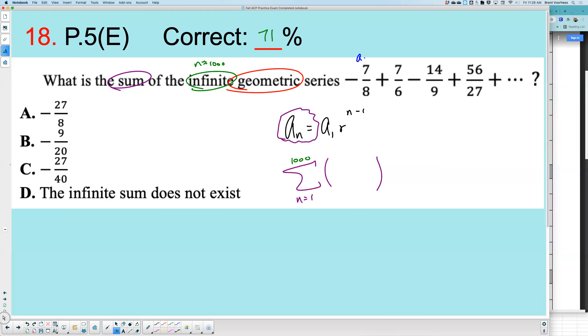So now going to the problem, a_1 is this term right here. So we'll plug that in. Negative 7 divided by 8. R, if you remember, it's being multiplied. So I'll put it in parentheses. R is the second term that's given divided by the first term. So it'd be 7/6 divided by negative 7/8.